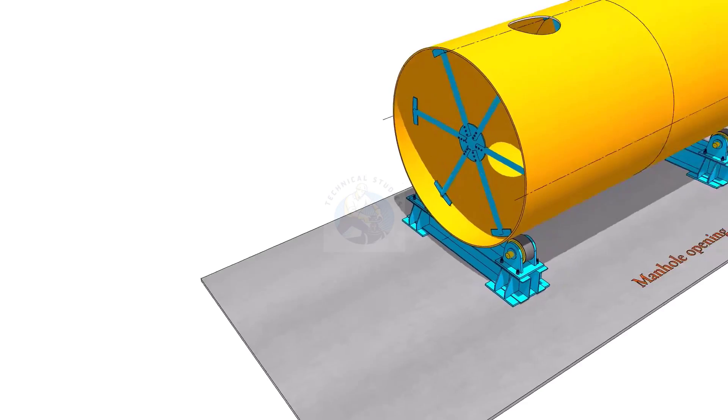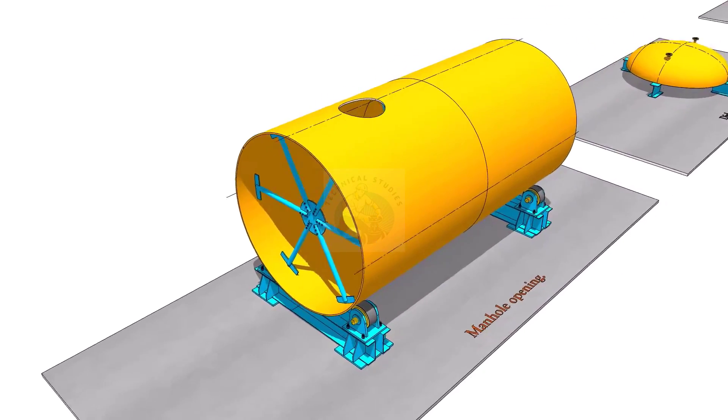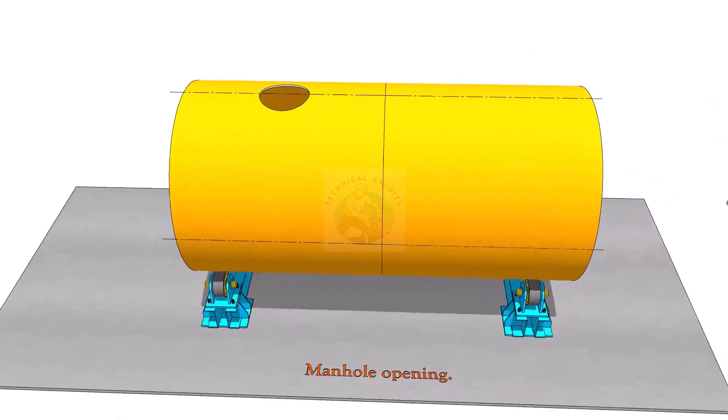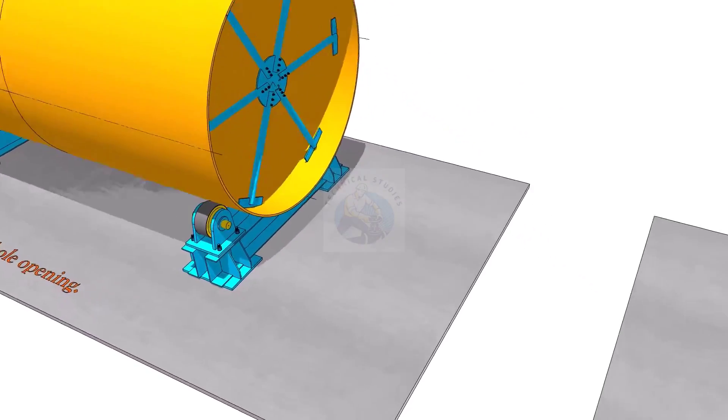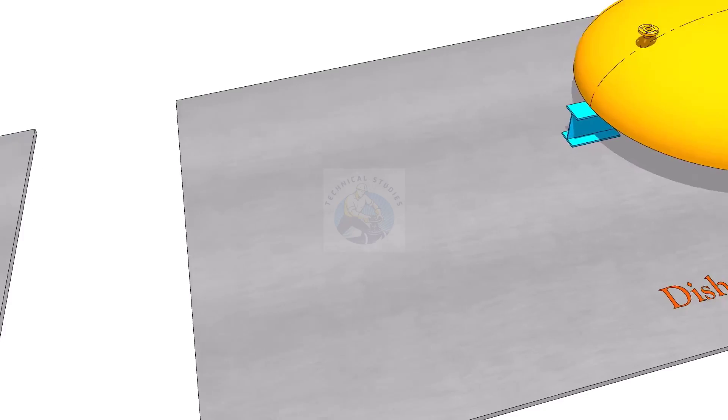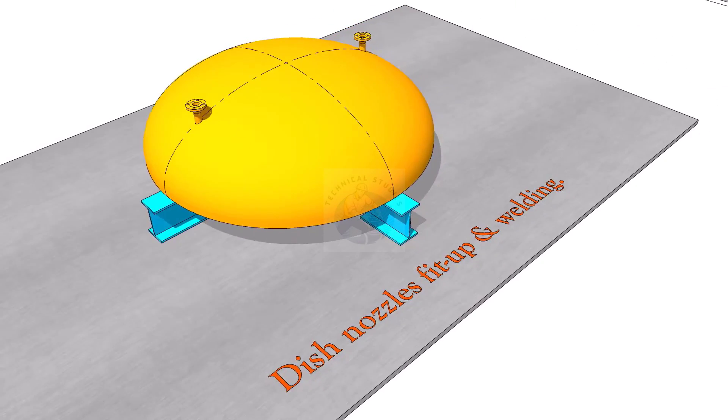Mark all nozzles, manholes, etc. as per the drawing. Cut the holes and install the nozzles and manholes. Install all nozzles on the dish end and complete the welding.